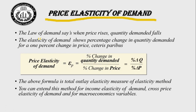Price elasticity of demand: The law of demand states that when prices rise, quantity demanded falls, and when prices decrease, quantity demanded increases. The elasticity of demand shows the percentage change in quantity demanded for a one percent change in price, ceteris paribus. The formula for price elasticity of demand is: percentage change in quantity demanded divided by percentage change in price. This formula is the total outlay method formula for measuring elasticity.